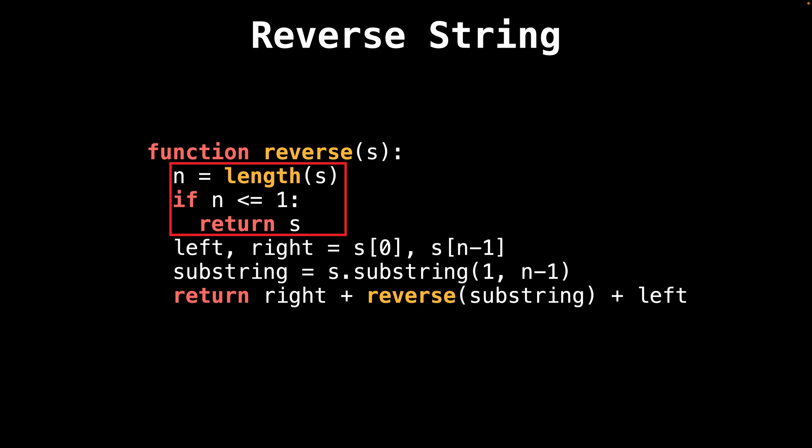However, if there is one character left after reducing the string using the outside in approach, we return that character since it represents the middle character of the string. And the middle character is the reverse of itself.